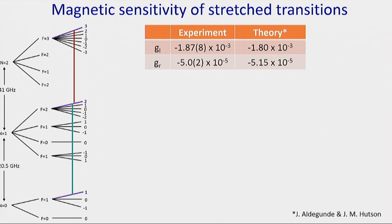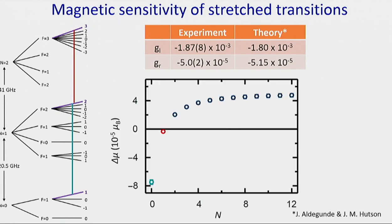Knowing these magnetic sensitivities, we determined the values of G_L and G_R appearing in the Zeeman Hamiltonian. Our collaborators Jesús Aldegunde and Jeremy Hudson calculated these values for calcium fluoride and other molecules, and experiments and theory are in good agreement. Using these values we can deduce the magnetic sensitivity of all stretched transitions for every N. The blue point — the 20.5 GHz transition — has sensitivity dominated by the G_L term. At high N there is a plateau dominated by G_R. The 41 GHz transition corresponds to the point where these two contributions cancel almost exactly, making it an extraordinarily magnetically insensitive transition.